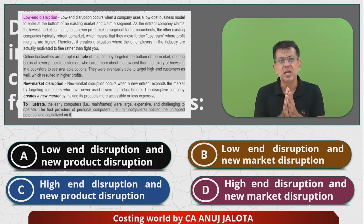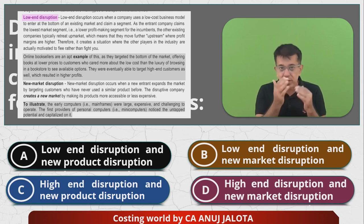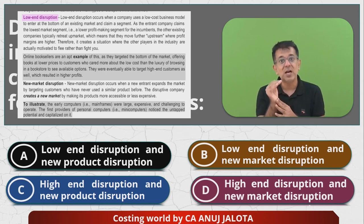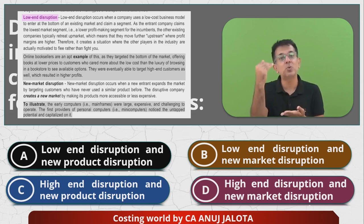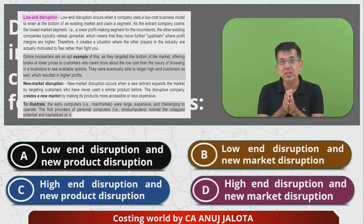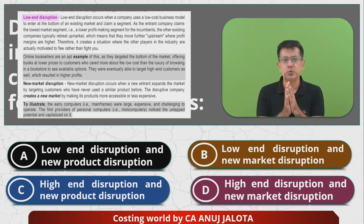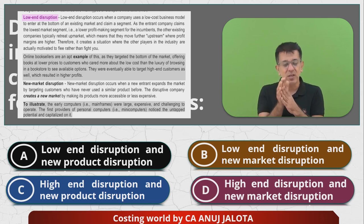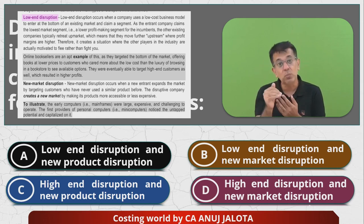For the incumbents — the other existing companies — they typically retreat up-market. To give a small example: say phones. Tomorrow you launch a phone at 5,000 rupees and start making good profits. The competitors at that time will start moving into other segments where prices are higher. If you are successful in this market, they start capturing more premium markets upstream where profit margins are higher. It creates a situation where established players are motivated to flee rather than fight you — they leave the lower-end market and capture the premium market.